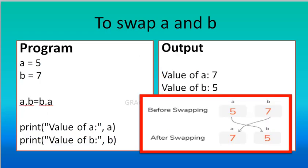Let's see another program — the same swapping concept, but without using a temporary variable. We can swap directly. A is equal to 5, B is equal to 7. Then we write: A comma B equal to B comma A. This directly performs the swap. A's value 5 is moved to B, and B's value 7 is moved to A.